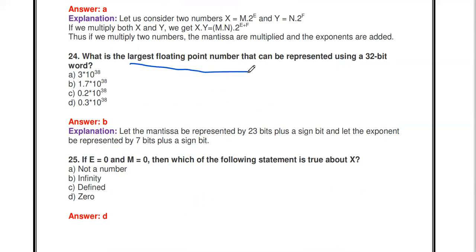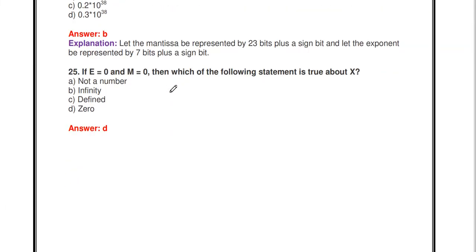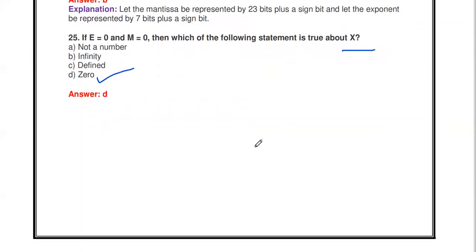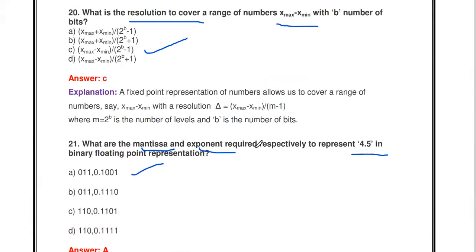What is the largest floating point number that can be represented using a 32-bit word? The largest floating point number is 1.7 × 10³⁸. If both the exponent and mantissa are 0, then the number x is also 0.